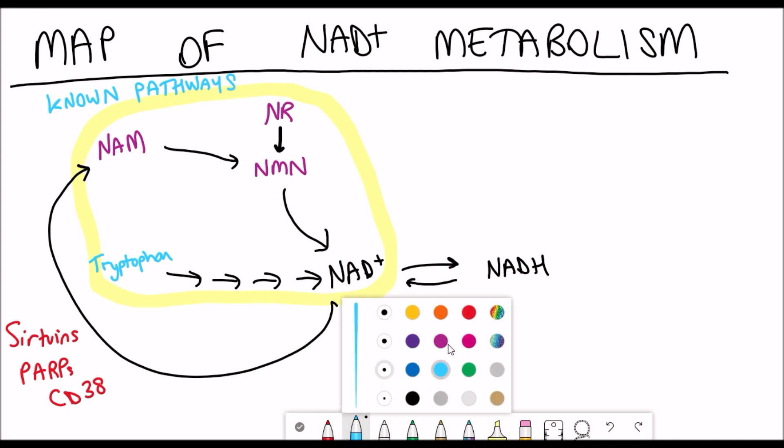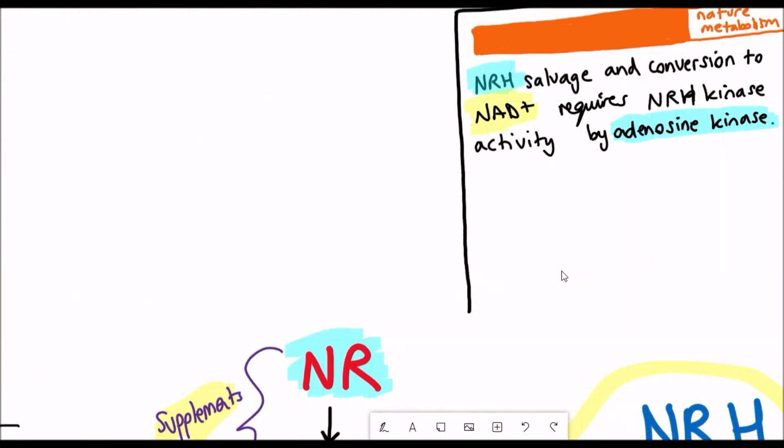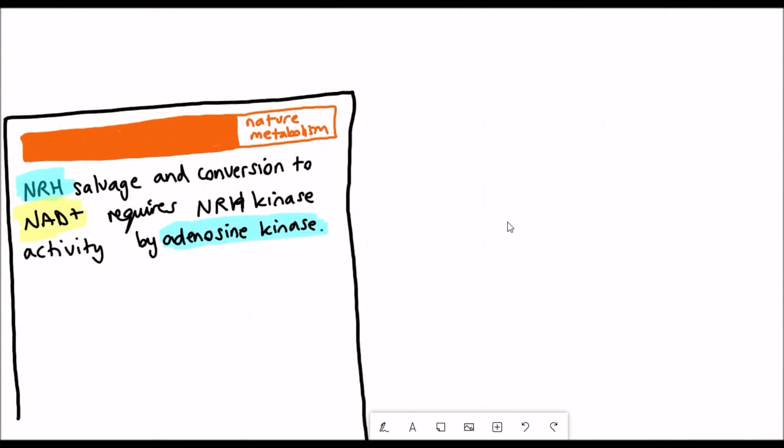These are the known pathways, but what we're going to talk about in this video is an alternative, potentially parallel pathway to also produce NAD plus from NRH, which is actually the reduced form of nicotinamide riboside NR. We'll talk about how this happens and what's the evidence that's been found in this paper to support this, and how could this potentially be used in understanding the use of supplements.